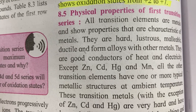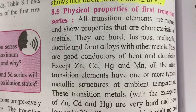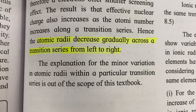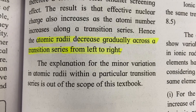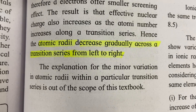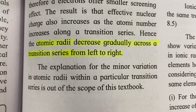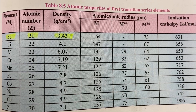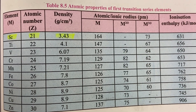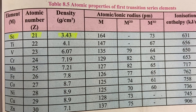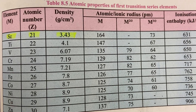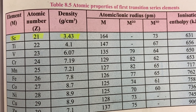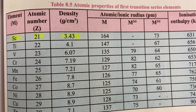Physical properties of the first transition series (3d series), from scandium to zinc: atomic and ionic radii decrease gradually across the transition series from left to right. The transition metal with the lowest density (lightest) is scandium, at 3.43 g/cm³.